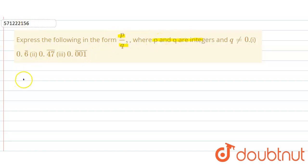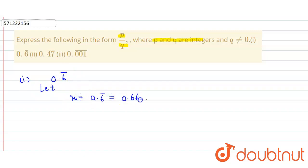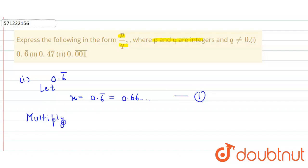In the first part, we have to convert 0.6 bar. So first we assume that x is equal to 0.6 bar, which is equal to 0.666... to infinity. We consider this to be equation number one, and then we multiply equation number one by 10.